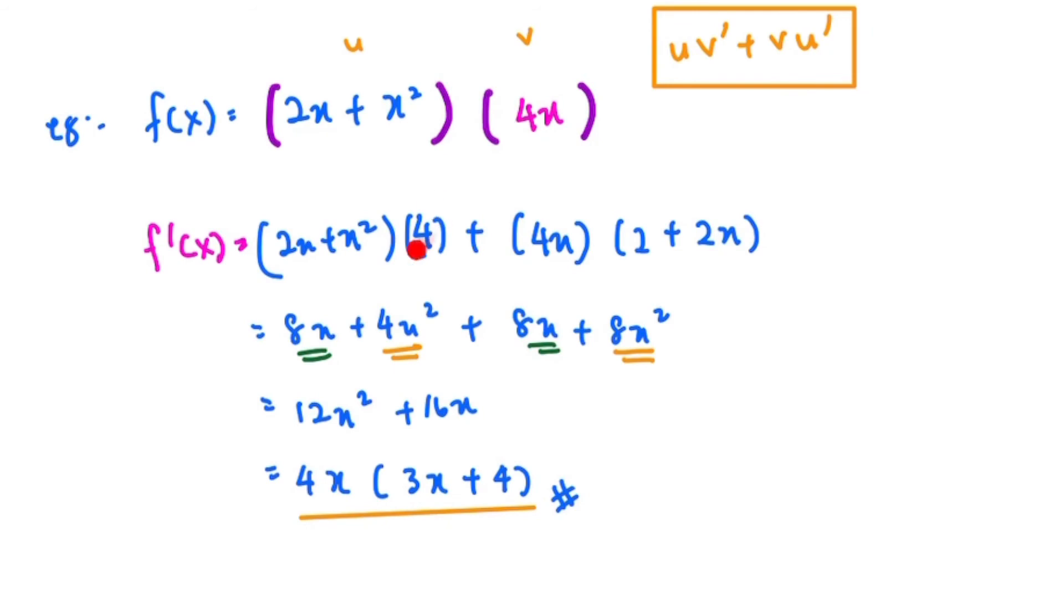So this is 2 plus 2x. Now let's expand everything and simplify. So this is it. Let's simplify: x squared with x squared, this is 12x squared, and simplify x with x, this is plus 16x.